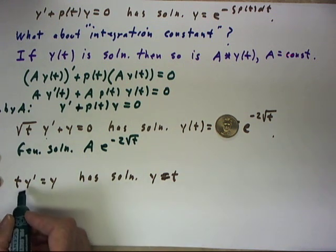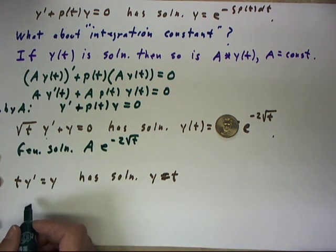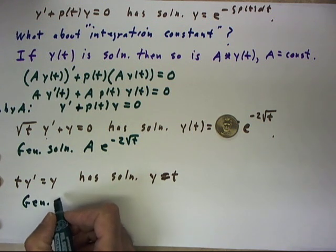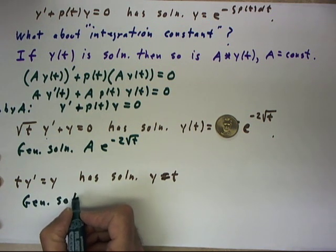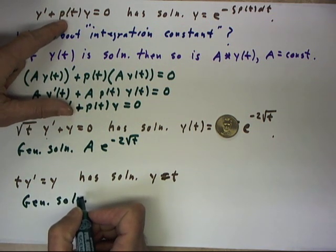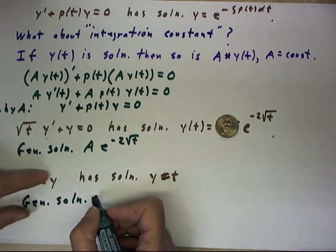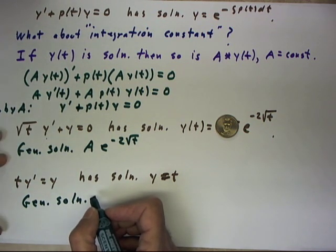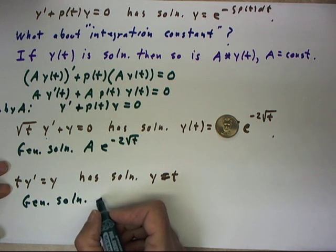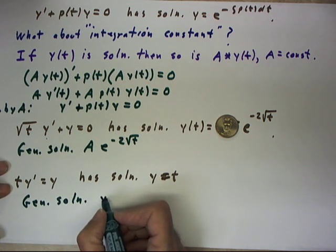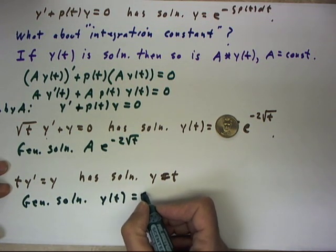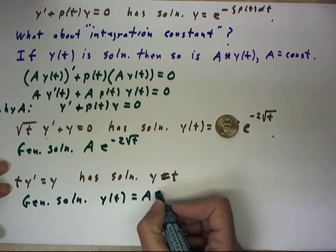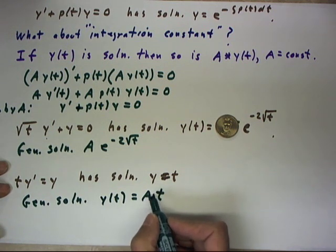Similarly, this equation had solution y = t. It's of the form y' + p(t)y = 0 if we simply rearrange it. So its general solution is y(t) equals A times this function, y(t) = At.